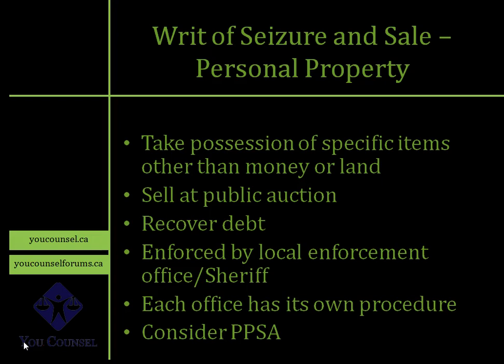You also want to keep in mind who actually owns the items you think the debtor has. For instance, if the debtor has computers or printers at their office, does the debtor own those items or are they on lease? If they are leased items, the sheriff will not be able to take and sell them because they're not owned by the debtor. It is important for you to have clear knowledge of what items you can take from the debtor, direct the sheriff to take those items, sell them at public auction, and give you your debt.